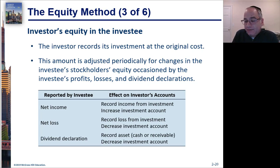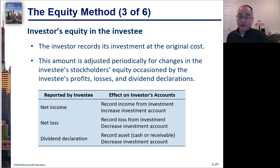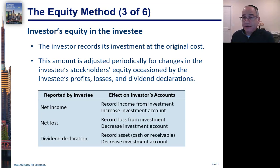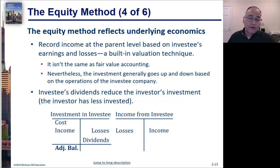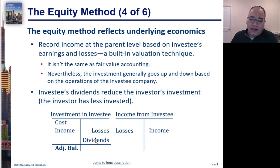If the investment declares a dividend, you're going to debit cash — because you're receiving cash — and credit the book value of the investment, because the value has gone down. In essence, the dividend is construed as a payback of the investment. So your investment account increases for income, decreases for losses, and decreases for dividends. The book value of the investment is constantly changing — this is not fair value accounting.